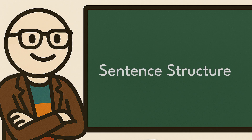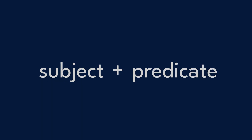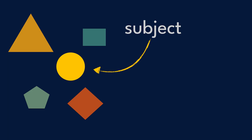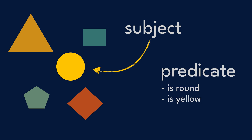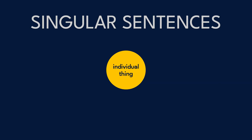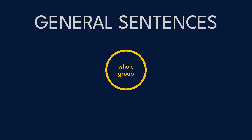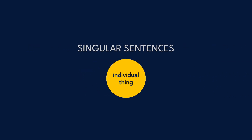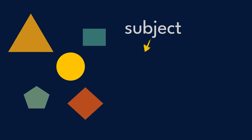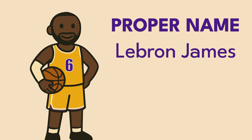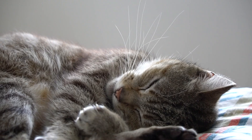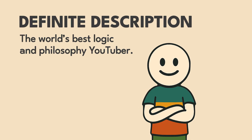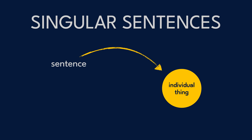So let's talk about sentence structure. In English, sentences are composed of a subject and a predicate. For example, 'The cat on the bed is sleeping,' or 'LeBron plays basketball.' The subject picks out what you're talking about; the predicate tells you something about it. Some sentences are about a specific individual thing; others talk about a whole group — the difference between 'Taylor Swift is a songwriter' and 'All songwriters are creative.' For now, let's focus on singular sentences. A sentence can point at an individual using a proper name like LeBron James, or a definite description like 'the cat on the bed' or 'the world's best logic and philosophy YouTuber.' Either way, the sentence points at one individual thing — that's what makes it singular.